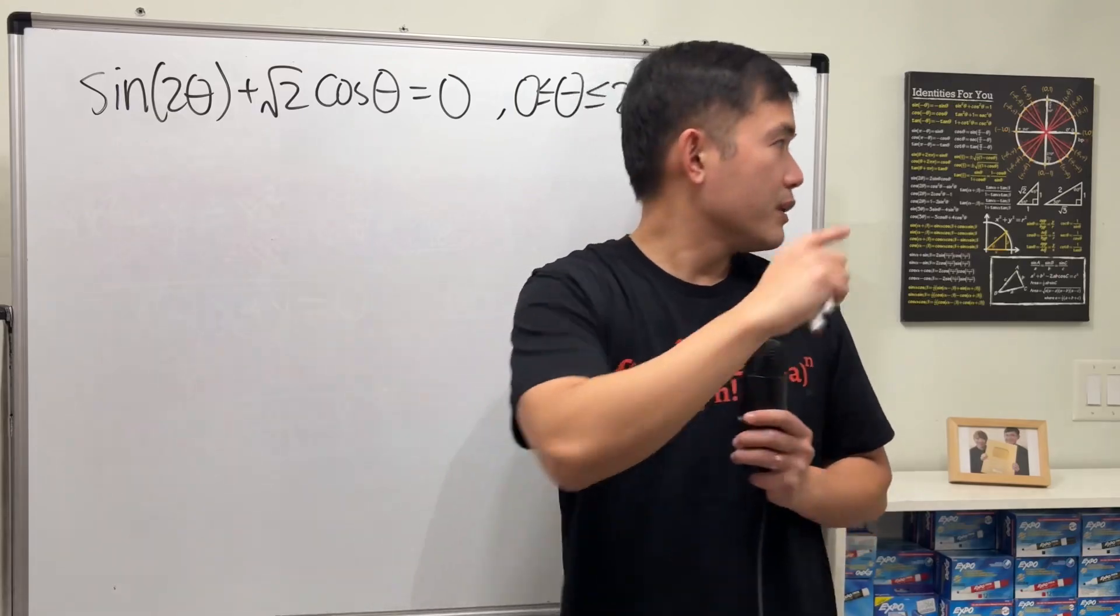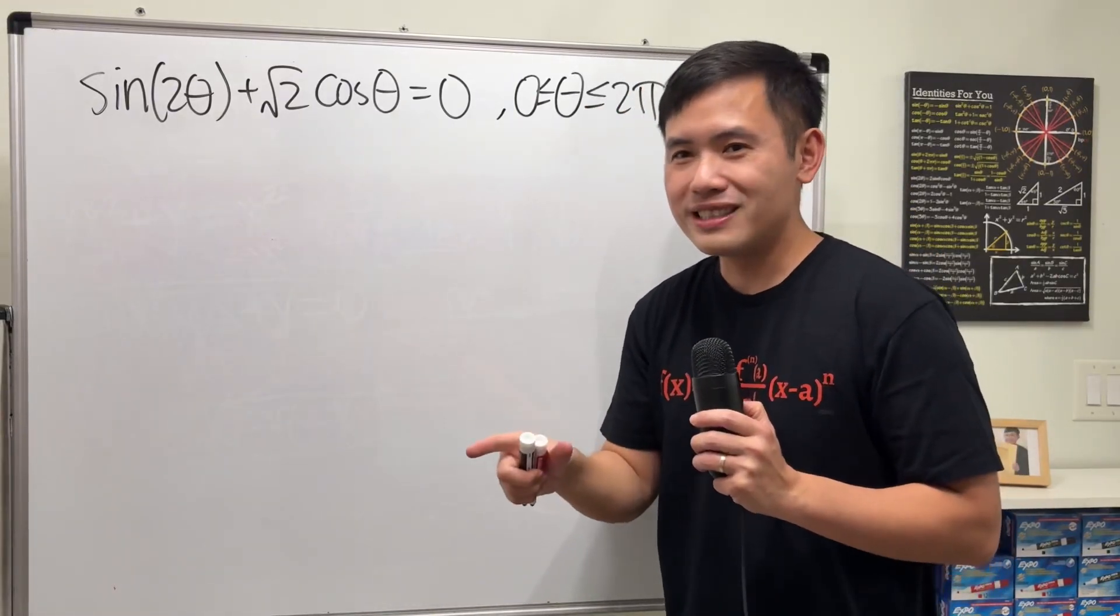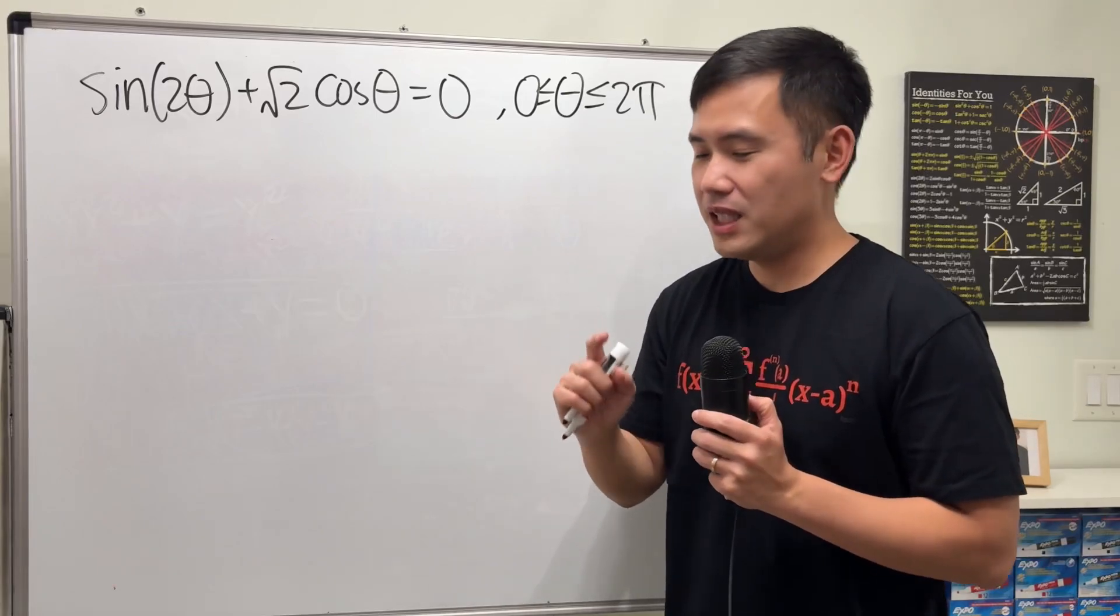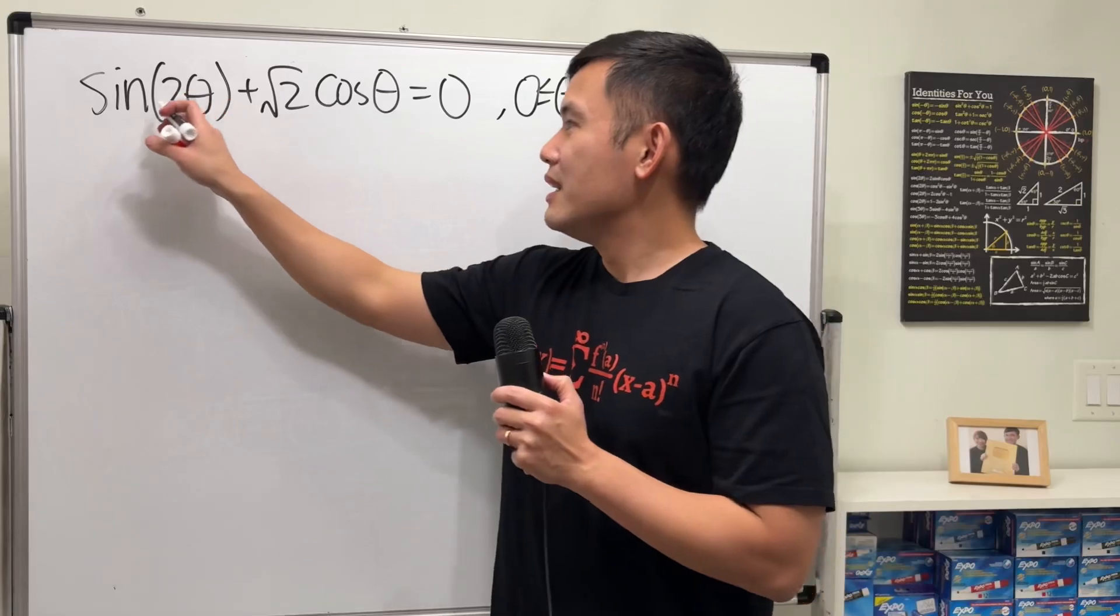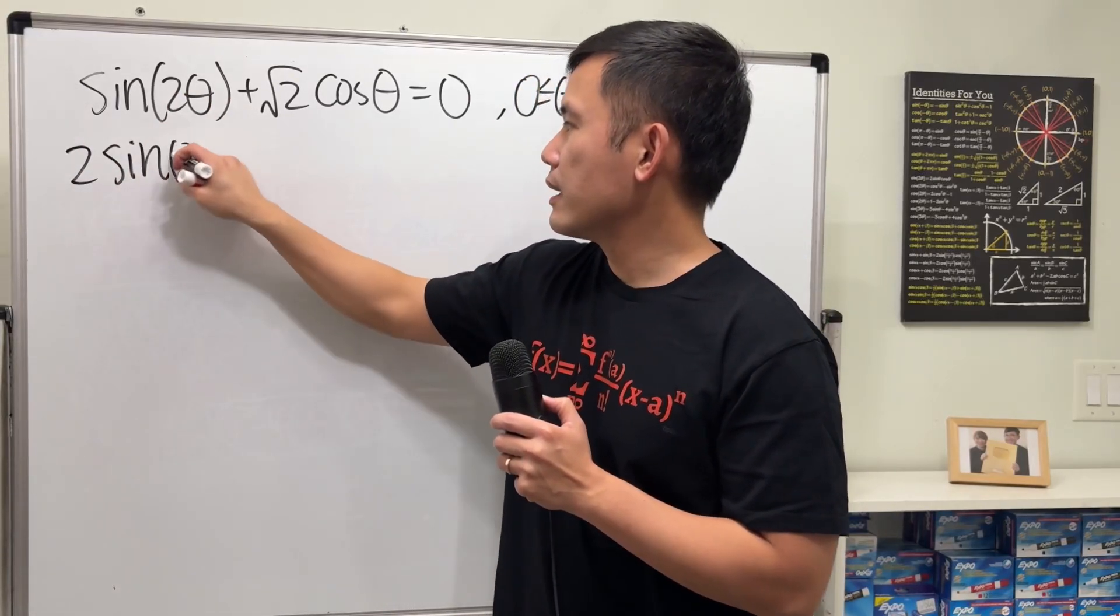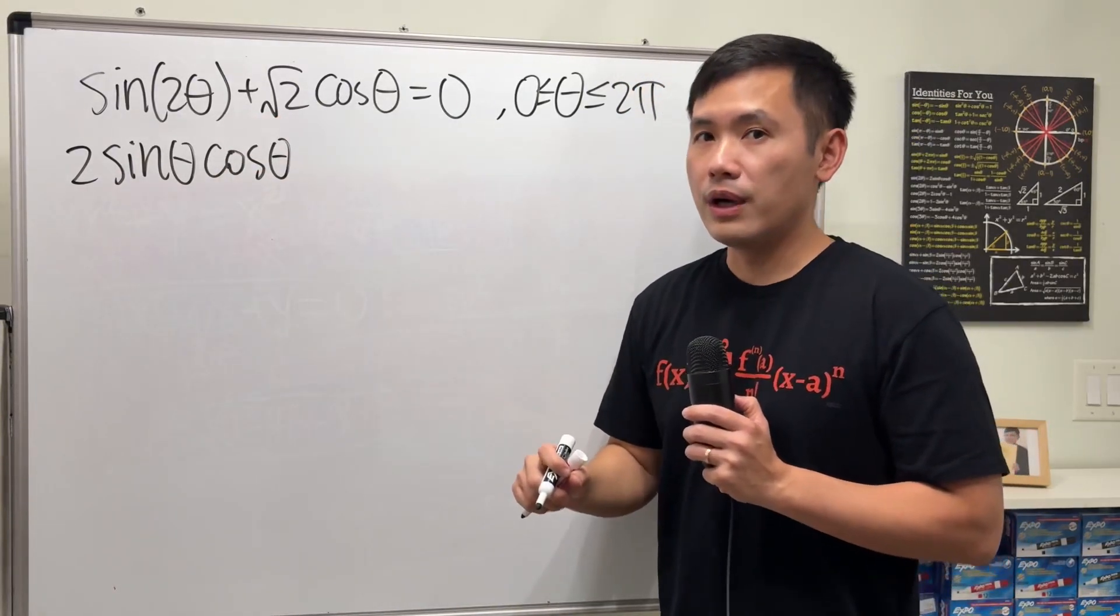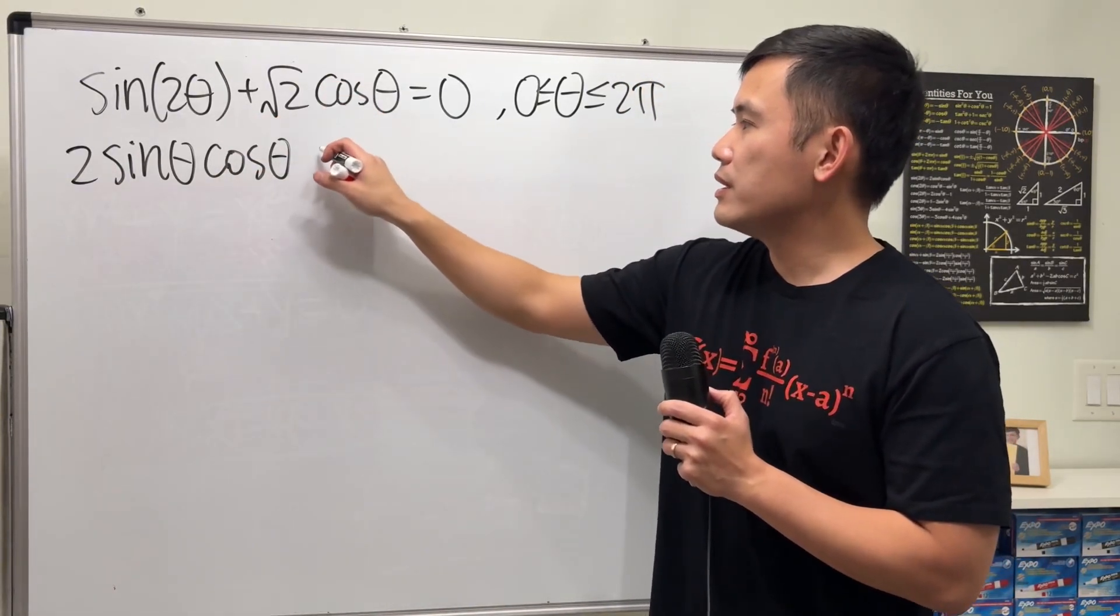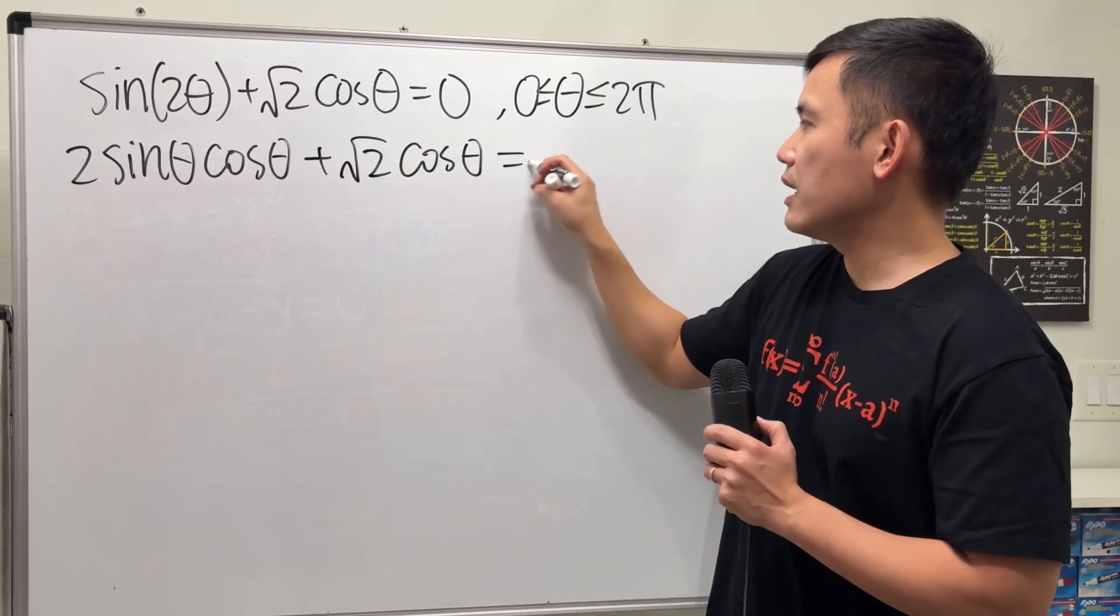Sine of 2 theta, in fact you can also look at that on the board, but you should actually have some notes with the identities. Keep a page of all the identities that you have to remember. This right here gives us 2 sine theta times cosine theta. Again, that's just the double angle identity. And then you continue plus square root of 2 times cosine theta and that is equal to 0.